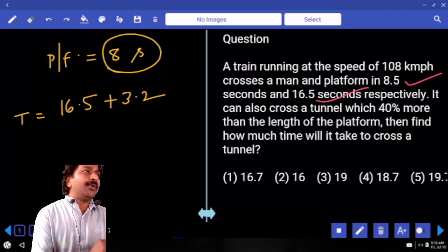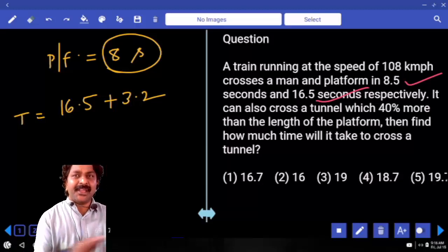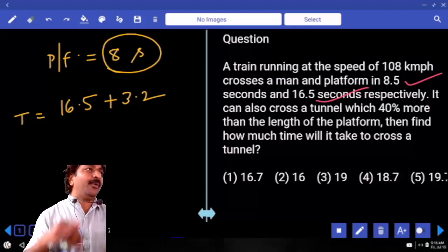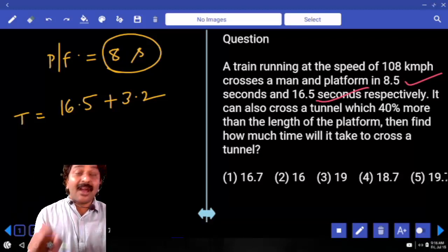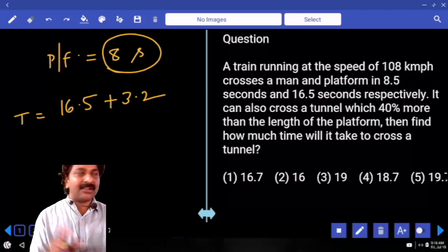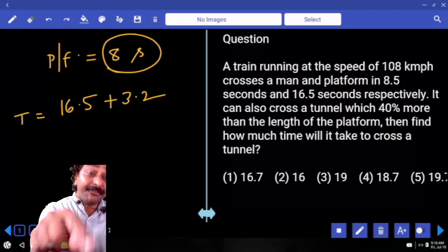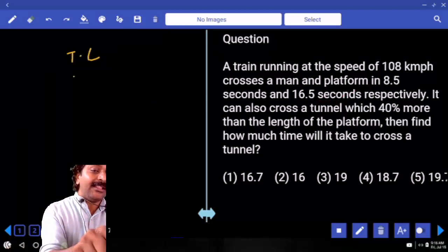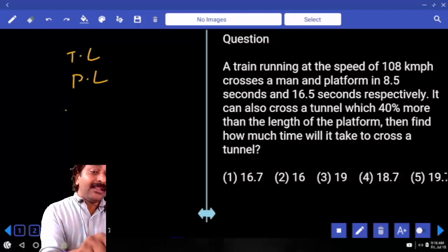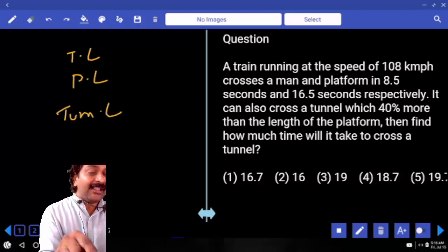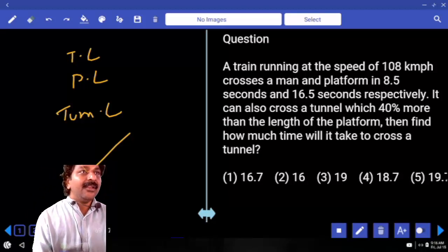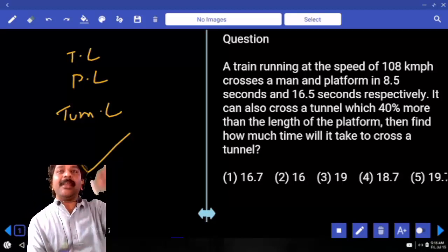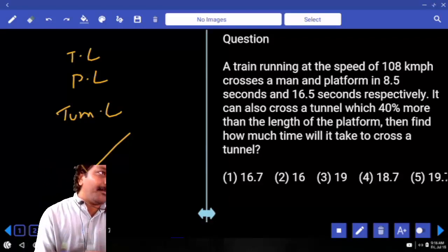So here you don't have to calculate length of the train, length of the platform, you don't have to increase it by 40% to make it tunnel length. Majority of students will definitely calculate train length, then platform length, then tunnel length and then they will try to calculate the answer. Yes, if you are also doing the same method, you cannot make any difference among your competitors.